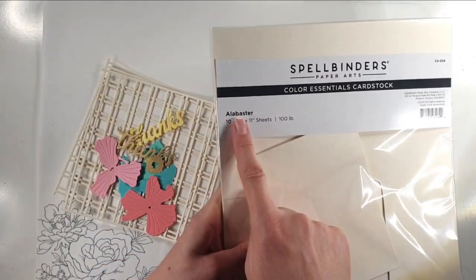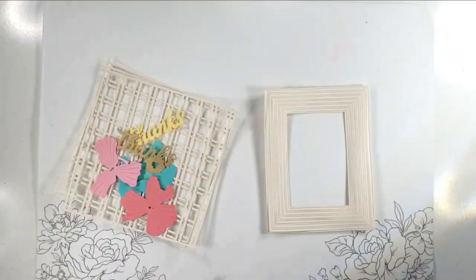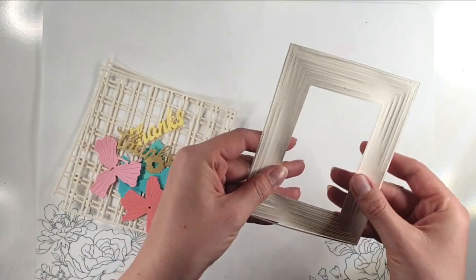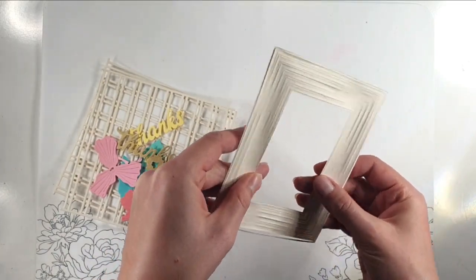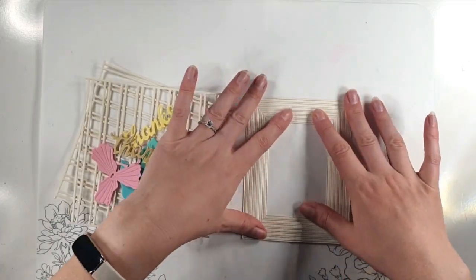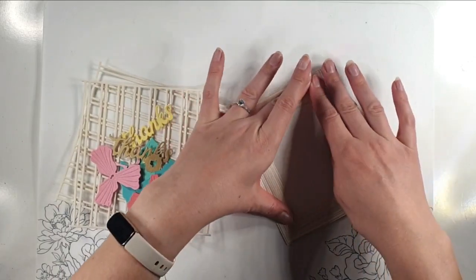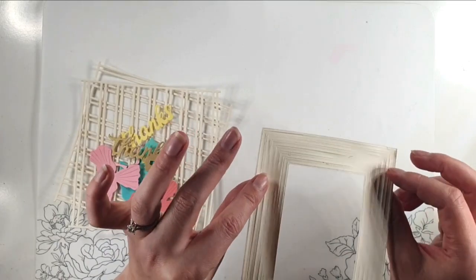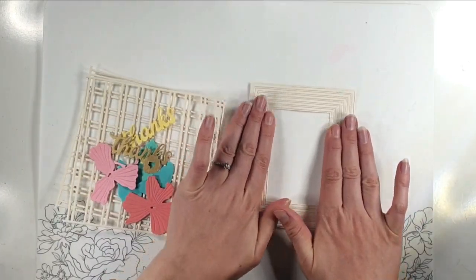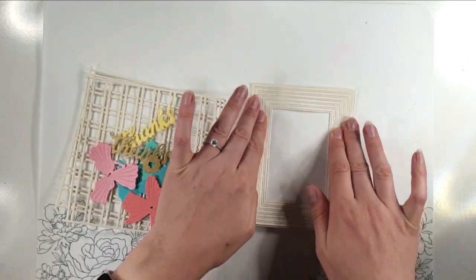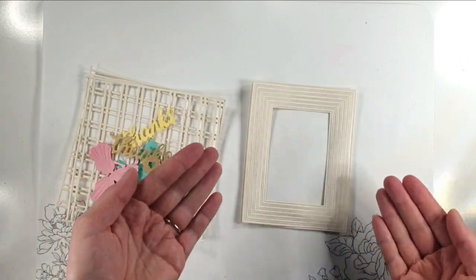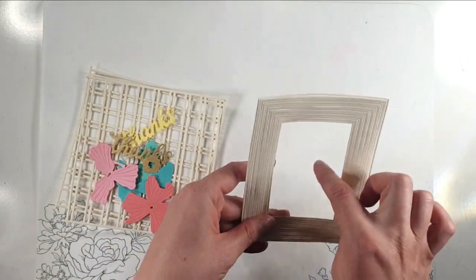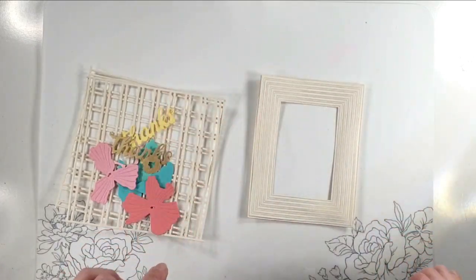I've used this Spellbinders Alabaster cardstock for the background and this is the fine frames die. You can see I've not quite cut through it. Normally I put this through my machine twice and I only ran it through once so that it kind of semi cut it. Because I want to use all of the frames together, it's actually easier to use while it's still together, but I didn't want to just emboss it because I want this piece cut out of the middle. I wanted the edges cut as well.